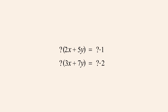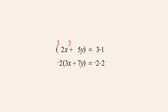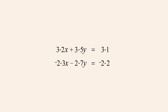For example, let's say we would like to eliminate the x-terms. If we multiply the first equation by the second equation's x-coefficient and the second equation by the first equation's x-coefficient, once we distribute the multipliers, the x-terms in both equations will have coefficients of 6. So if we flip the sign of one equation's multiplier, the x-terms will cancel when the equations are added. Before adding, we must first distribute the multipliers to the terms in parentheses, then complete the arithmetic in both equations.